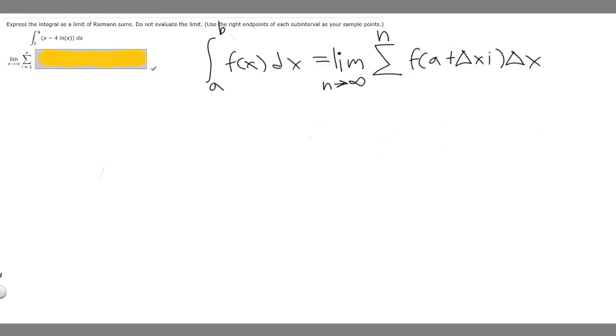In this problem, we're told to express the integral as a limit of Riemann sums. Do not evaluate the limit. We're told to use the right endpoints of each subinterval as your sample points. We're given this integral from 3 to 9 of (x - 4) times ln(x) dx.